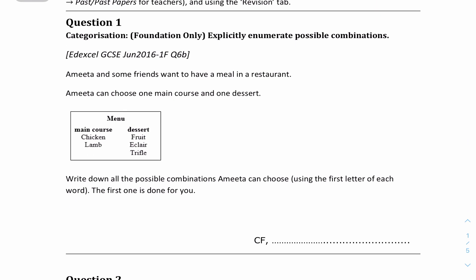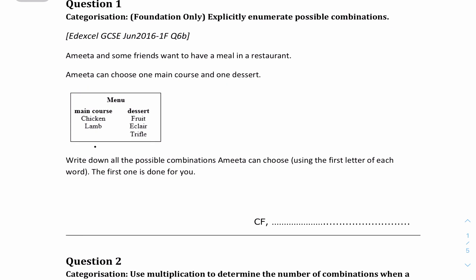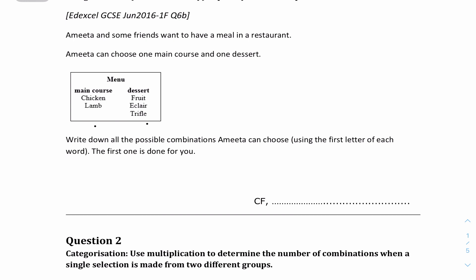Number one: Amita and some friends want to have a meal at a restaurant. Here are the main course and dessert options — Amita wants to choose one main course and one dessert. Write down all the possible combinations she can choose; the first one is done for you. So we have one main course and three desserts linked one-to-three. The first choice is chicken and fruit, which is already written. The second choice is chicken and eclair. Then chicken and trifle, and so on.